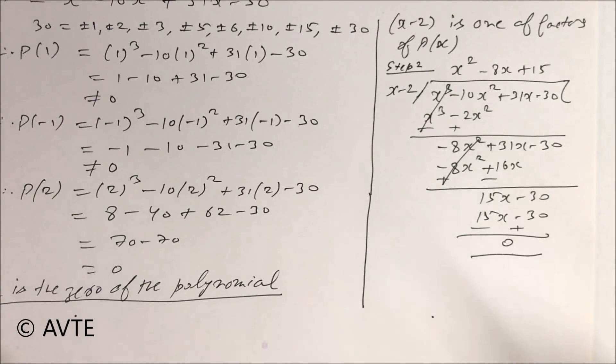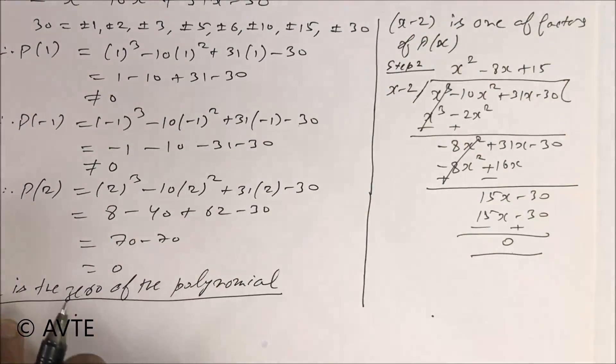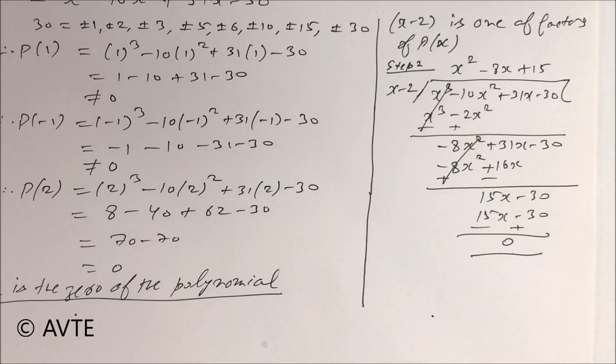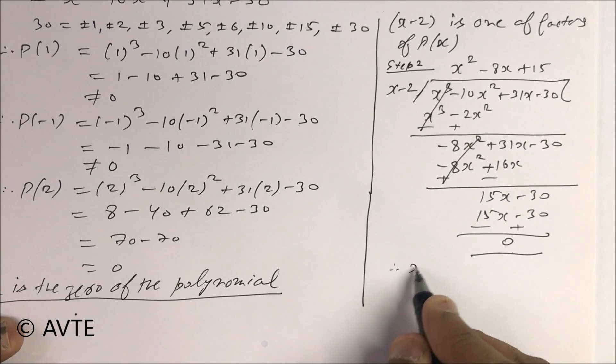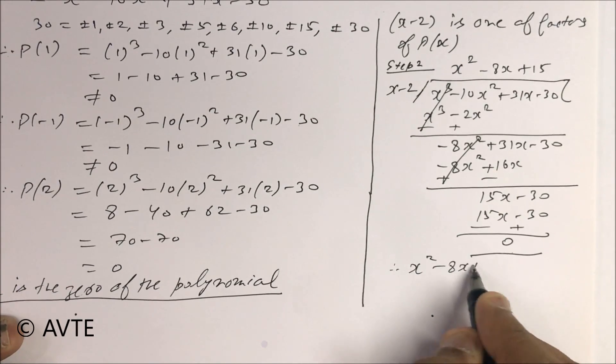So your remainder is 0, but obvious, because 2 is the zero. So x - 2 has to be a factor. So your other factors are x² - 8x + 15.